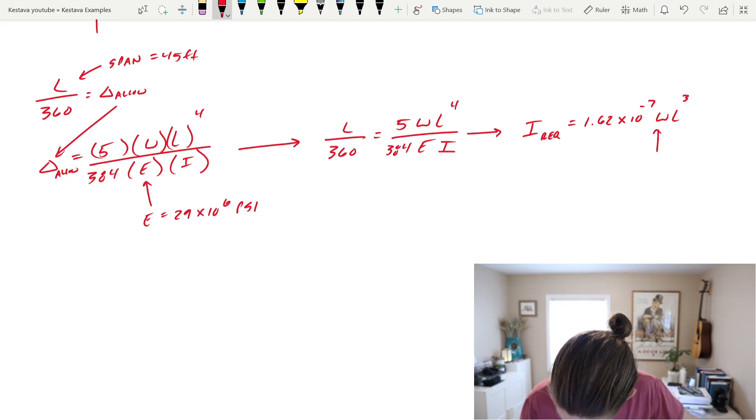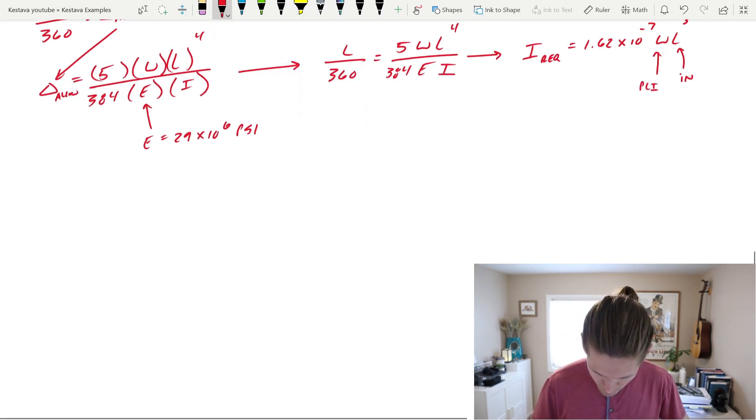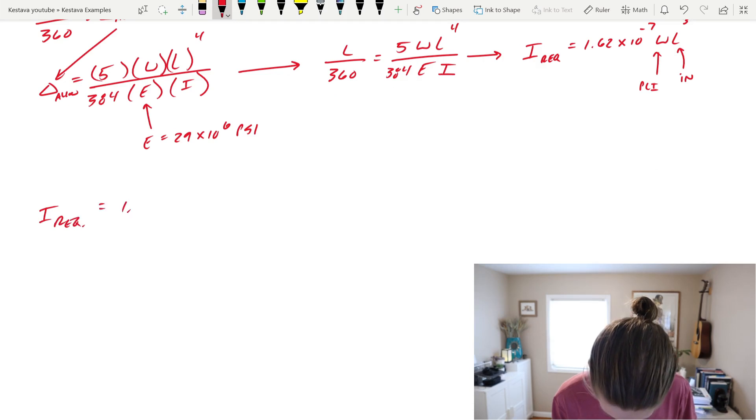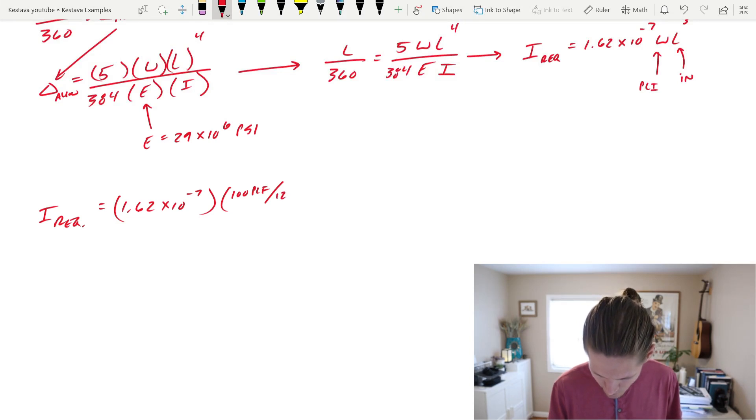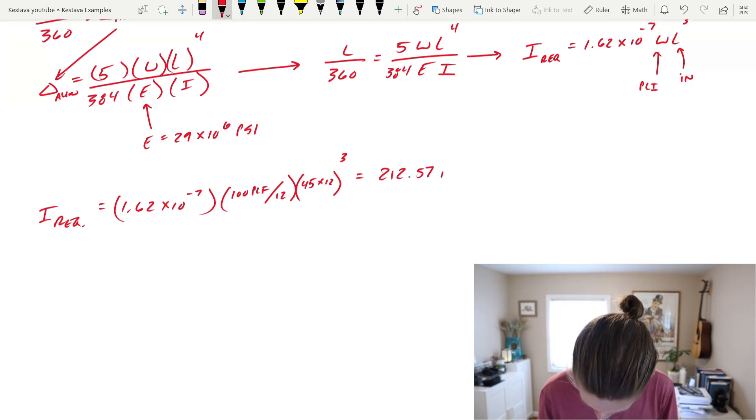Something important to note: W is in PLI, so pounds per linear inch, and L is in the units of inches. You could plug everything into this equation totally fine and pull out your I required, but what we've done is just taken it a step further and based on the units that I provided here gives you a slightly easier equation to plug in more quickly. If we scroll down a little bit and we plug in based on our equation, I required is going to be equal to 1.62 times 10 to the negative 7th, W which is 100 PLF but we need to get that into PLI so divide that by 12, multiplied by the length of our truss, again this is 45 feet but we need to get that into inches so 45 times 12 cubed. That gives us an I required under the deflection criteria we provided of L over 360 equal to 212.57 inches to the fourth.